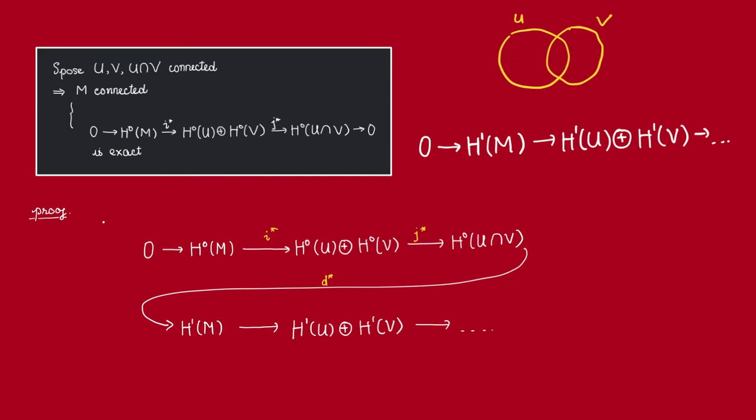Now in this video, we want to talk about a special case of this, which happens quite often. This is when U and V are connected, and also their intersection is also connected. In that case, we claim that M itself is also connected, and that this sequence in degree 0 must be exact, which means that this map J star here must be surjective.